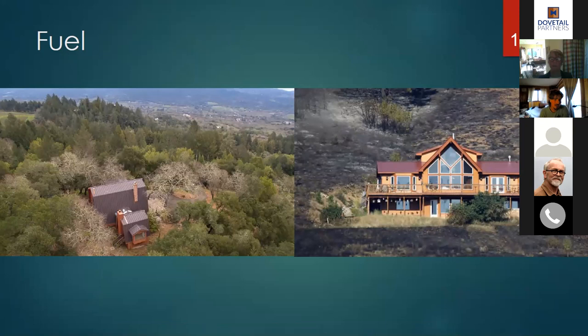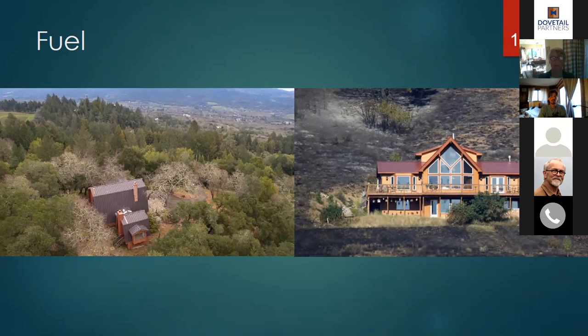From a wildland firefighter's point of view, removing ladder fuels protects your home. The home on the right has been successfully burned around with no damage — probably because there was no fuel around it. The home on the left would likely be lost. A lot of times we're short on resources and time when a fire moves through, and sometimes we just have to say a house will take too long to prep and leave it. If you as a homeowner can mitigate the fuel around your home, that helps us greatly.